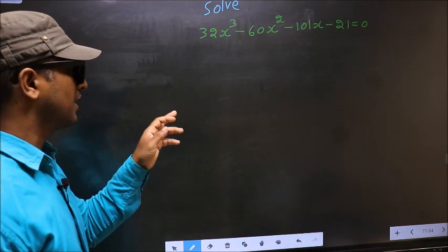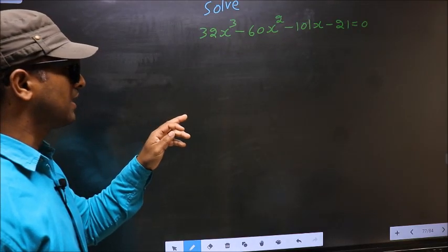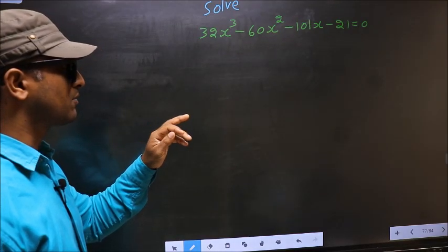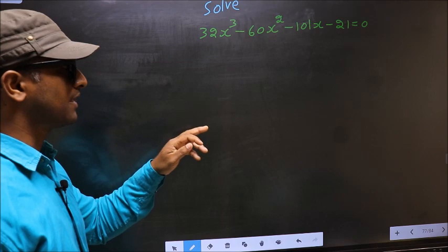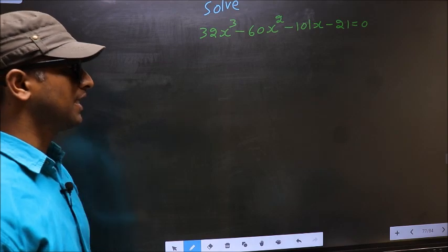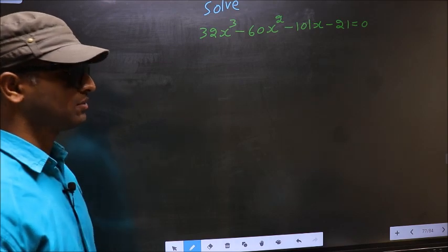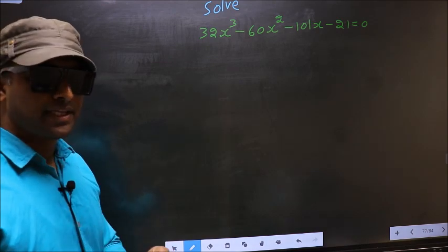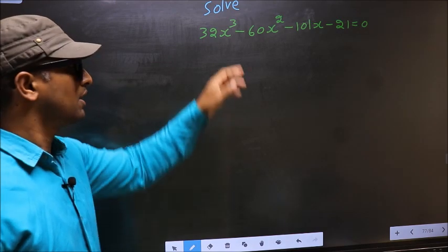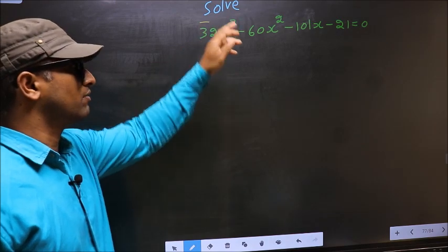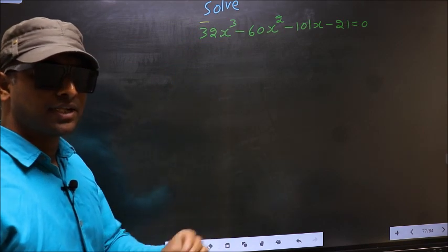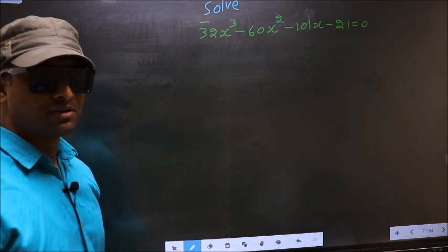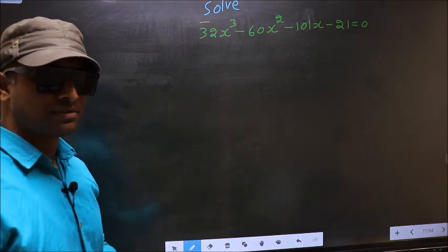Solve 32x³ minus 60x² minus 101x minus 21 equal to 0. They told us to solve, which means we should get the values of x.